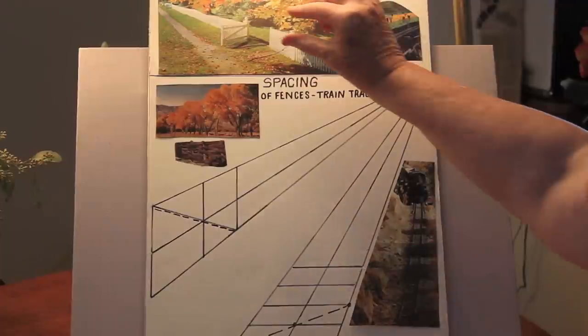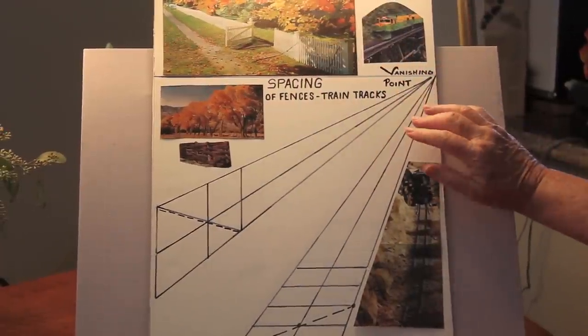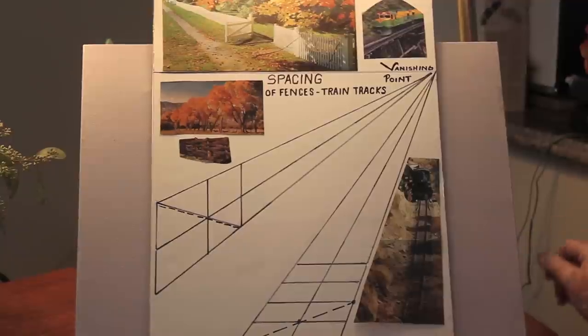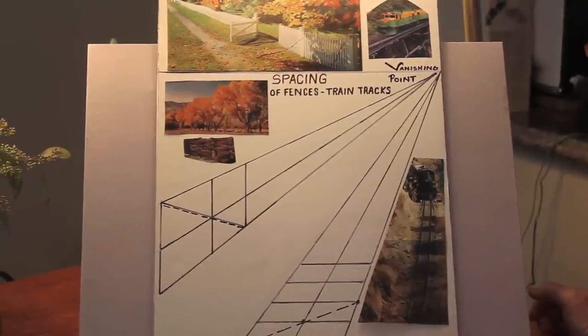So you can see where the fence goes into the distance. In this case, you're looking at trees. The trees are the same size, but they get smaller as they go into the distance.